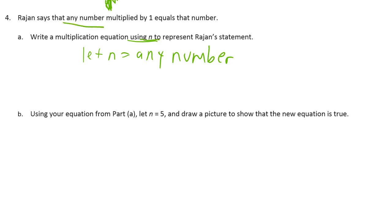And he says that any number multiplied by 1. So that's any number is n. Times 1. Right? Multiplied by 1. Equals that number, which would be n. That's it. That's all you need.